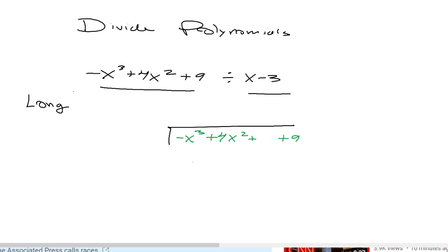The first one is what we call the long way. Basically this is what you learn in elementary. Divide negative x to the third plus 4x squared plus 9 by x minus 3. Notice I left some space between 4x squared and 9. It's because I need to put a placeholder.